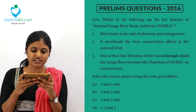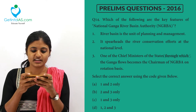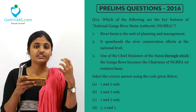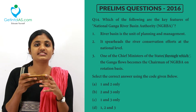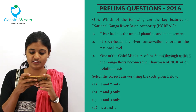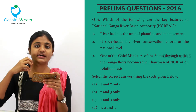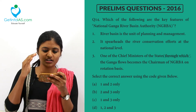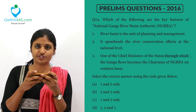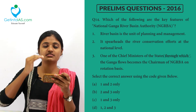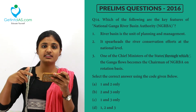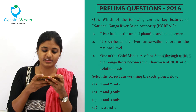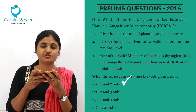Regarding the key features of the National Ganga River Basin Authority (NGRBA): the river basin is the unit of planning and management, and the NGRBA spearheads river conservation efforts at the national level — both correct. However, the third statement — that a chief minister of a state through which the Ganga flows becomes chairman on a rotation basis — is wrong, because the Prime Minister is the chairman of NGRBA. So option A (1 and 2) is the correct answer.